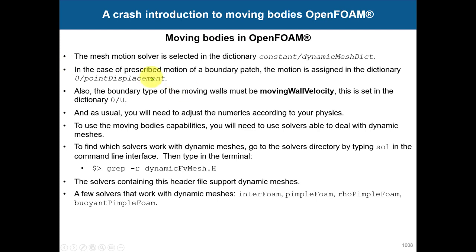You need to set up boundary conditions for the moving bodies. There is a new boundary condition, pointDisplacement, which represents how the mesh is moving — used for prescribed motion and rigid body motion. In all cases where something is moving, you need to add the boundary condition movingWallVelocity in the velocity field. Do not use fixedValue velocity — it will run but give wrong results. Always set movingWallVelocity. This is very important.